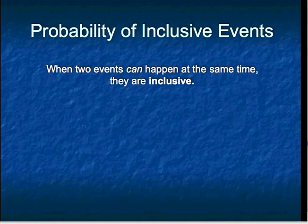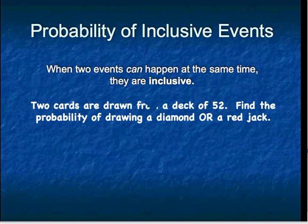Next, we're going to talk about probability of inclusive events, which is what happens when two selections are able to happen at the same time. They're said to be inclusive.